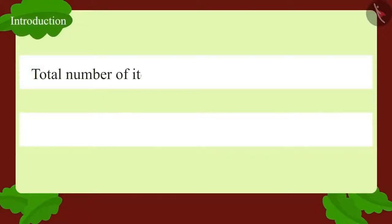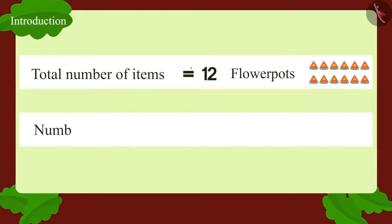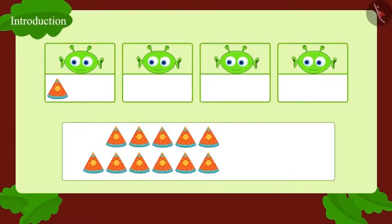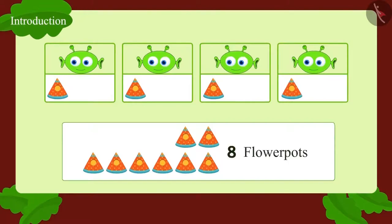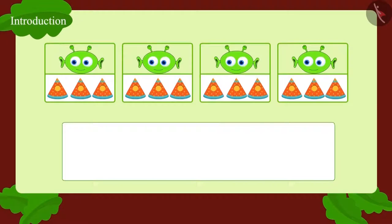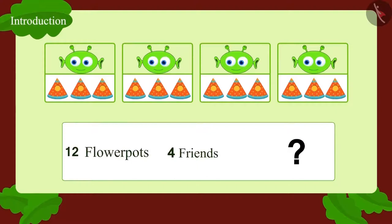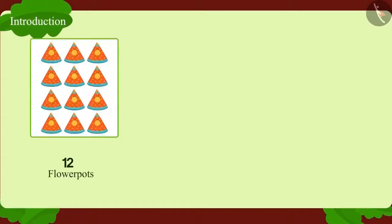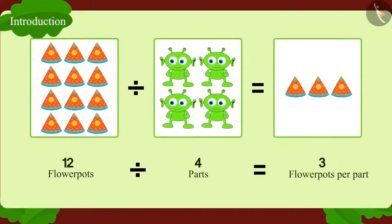What is the total number of objects? 12 flower pots. Among how many people? 4 friends. We will give one flower pot to each friend. 8 flower pots are left. We continue giving one flower pot each to the 4 friends till all are over. 12 flower pots have been divided among 4 friends — each friend got 3 flower pots. We write it as: 12 divided by 4 equals 3.